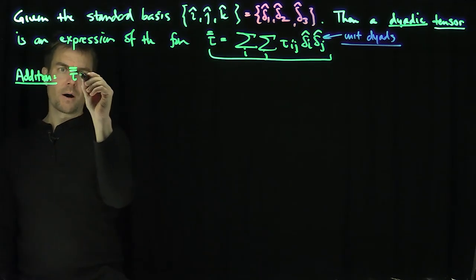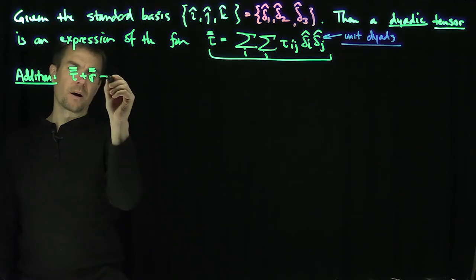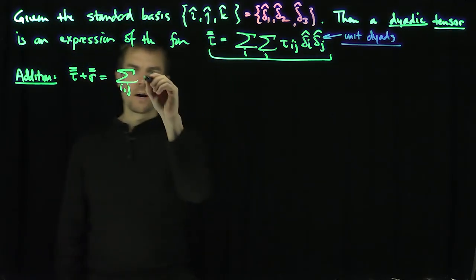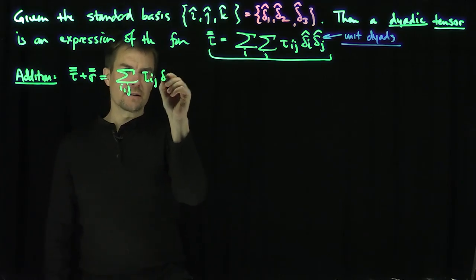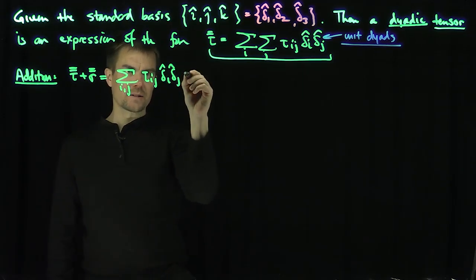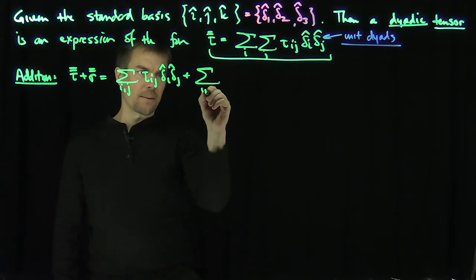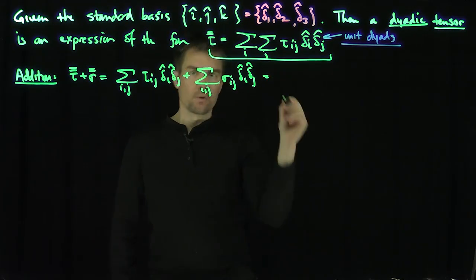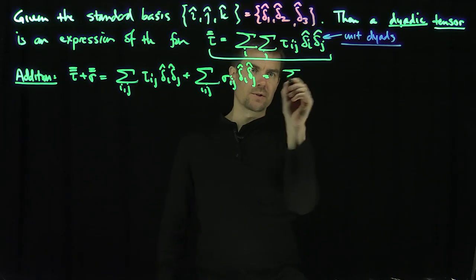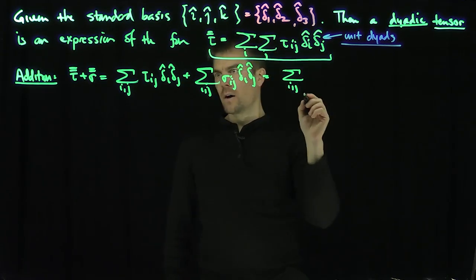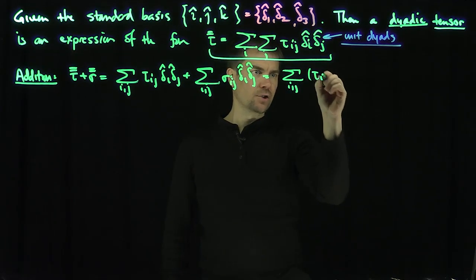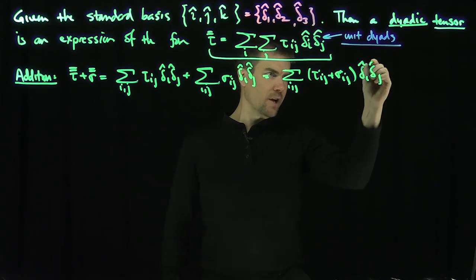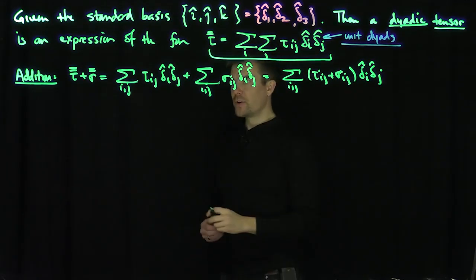So if I had tau-bar-bar plus sigma-bar-bar, that would be the sum over i and j of tau_ij delta-i-hat delta-j-hat, plus the sum over i and j of sigma_ij delta-i-hat delta-j-hat. By definition, that's just the sum over i and j of (tau_ij + sigma_ij) delta-i-hat delta-j-hat. That's how you add two dyadic tensors together.